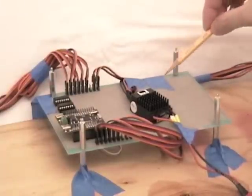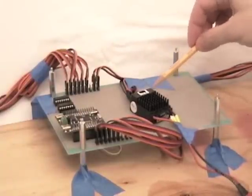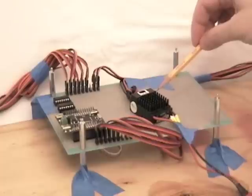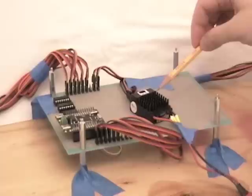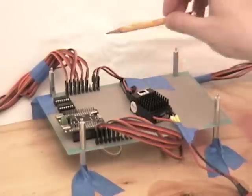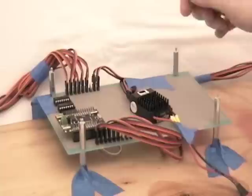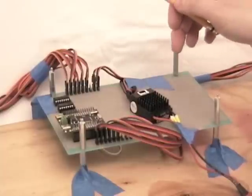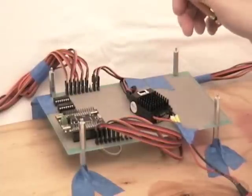I am using a Castle Creations battery eliminator circuit here to power the servos. This will output, I believe, up to 20 amps of current. It's a little switching regulator that runs off a LiPo battery.